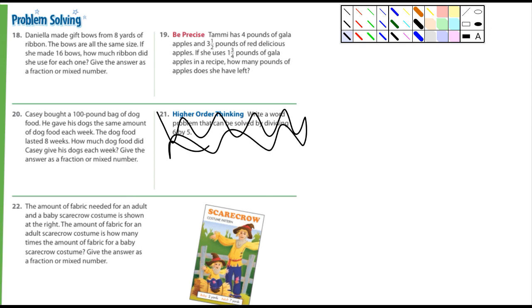How about number 20? KC bought a 100-pound bag of dog food. He gave his dogs the same amount of dog food each week. The dog food lasted 8 weeks. How much dog food did KC give his dogs each week? Well, you need to divide 100 by 8. And I'll let you figure that one out.